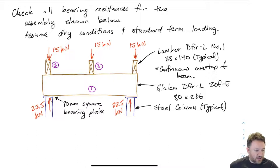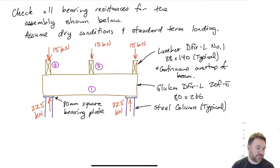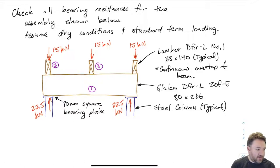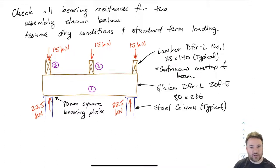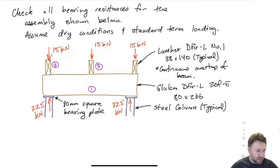I also need to check the squeezing bearing capacity at the end where I have a restraint on one side and a load on the other. The beam doesn't know there's a support there — all it sees is the load. I have two loads: 22.5 on the bottom and 15 on the top. Since they're within D, the depth of the beam, of each other, I need to also consider this case for squeezing. I also have to check the resistances of the joists, because as the joists load the beam, the beam also loads the joist — so the joist also has an associated compression perpendicular bearing resistance.